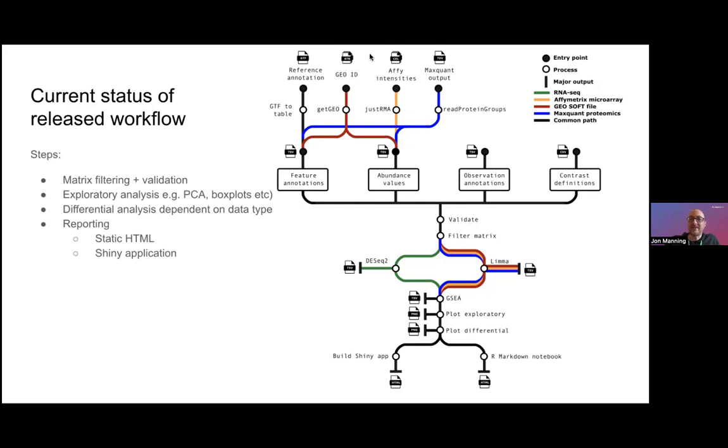I also want to highlight this top left corner of the tube map here. This is just the different input methods that we have that can be used to generate these primary inputs. For example, we have an input method using the get GEO module which uses a GEO identifier to pull a matrix from GEO. And we have a pathway by which you can specify matrix array intensities and they again get converted into a matrix which can be used in the downstream analysis. So these are just different entry points into the workflow to generate these common inputs.